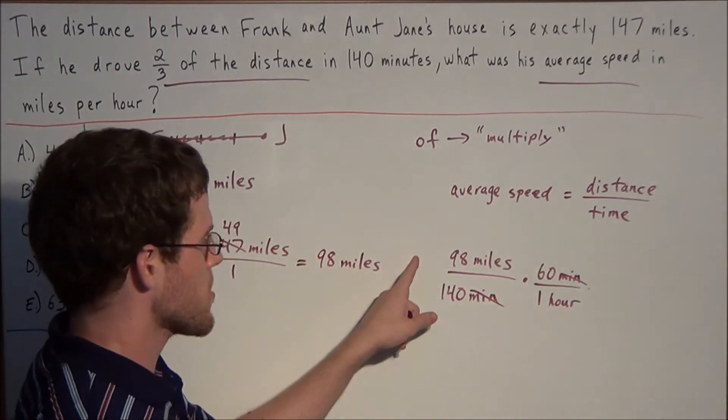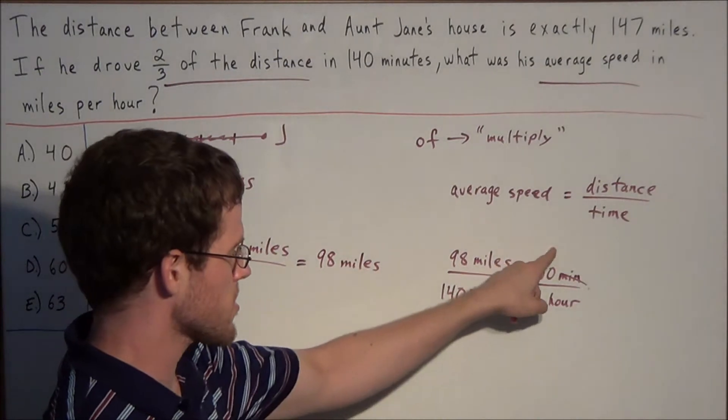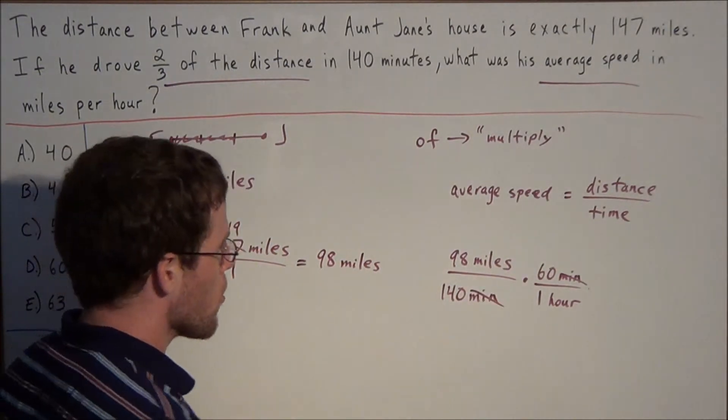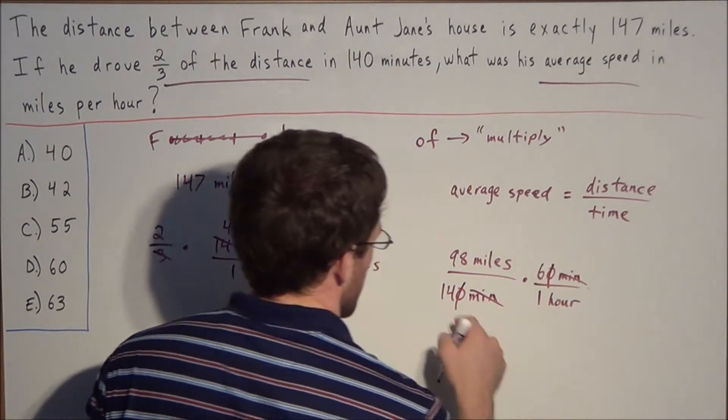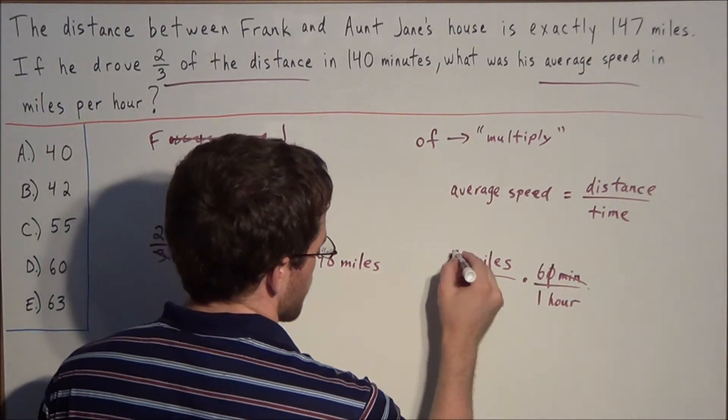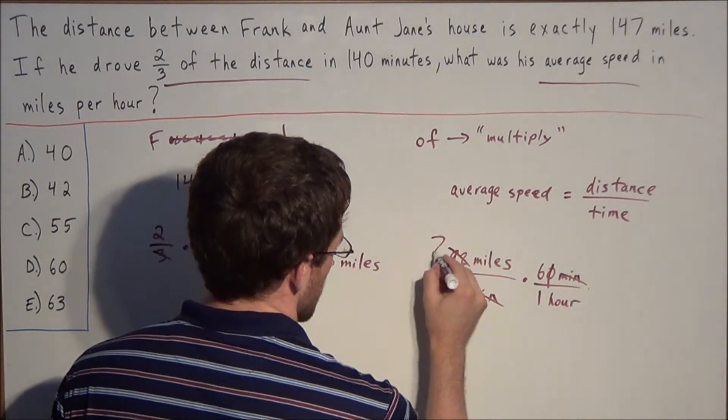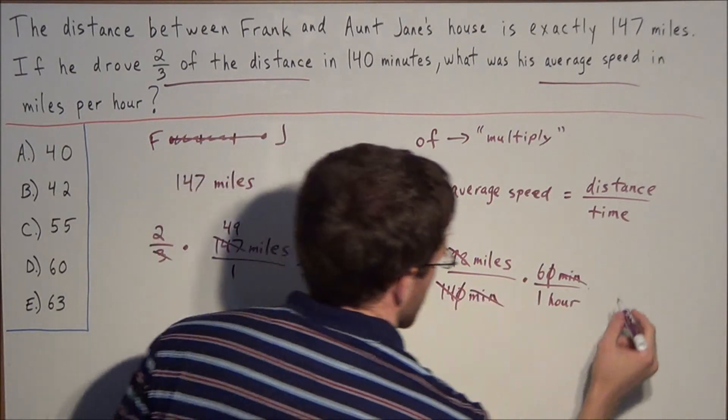We can punch this into our calculator: 98 times 60 divided by 140. Or we can note that common zeros cross off, then 98 divided by 14 is 7, and 7 times 6 equals 42.